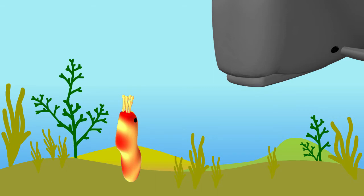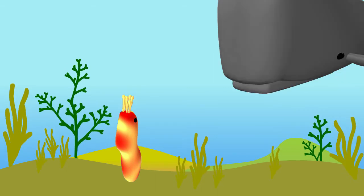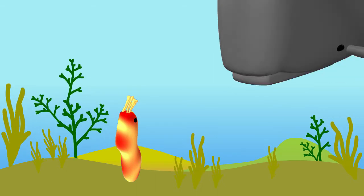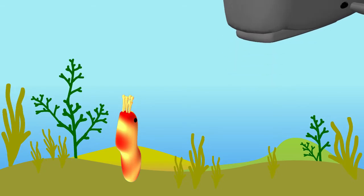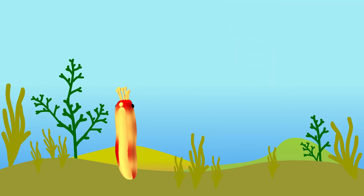The whale accepted the sea cucumber's excuse, and they agreed to meet each other at the round beach three days after. Seeing the whale swim away...